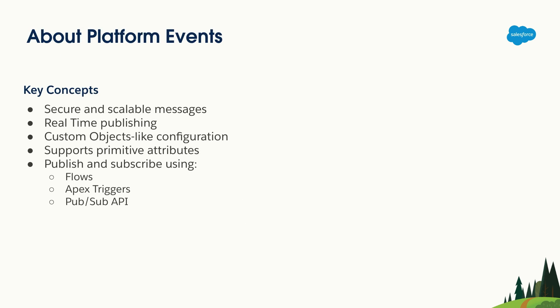Now that we've talked about PubSub API and event-driven architectures, the final piece is messages. In Salesforce, we use platform events as the source of messages. Those messages are secure and scalable, and they are really similar to custom objects in the sense that you can configure them using the Salesforce UI, add fields — mostly primitive fields like text, number, booleans, or dates. If you want to publish or subscribe, you can use flows, Apex triggers, and of course PubSub API.